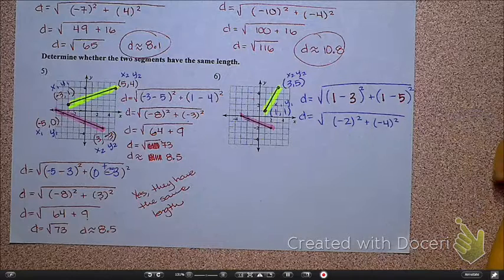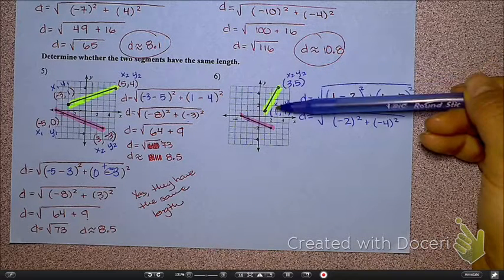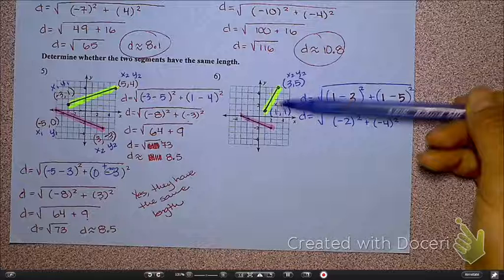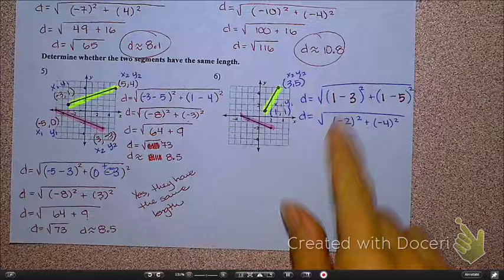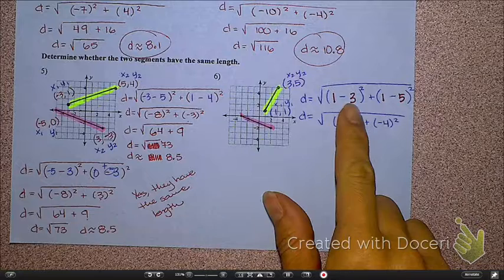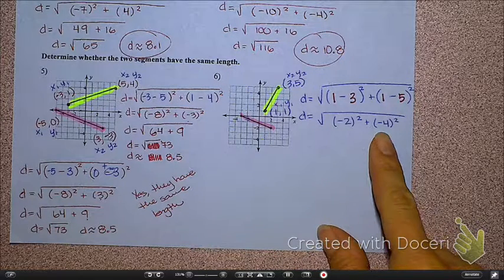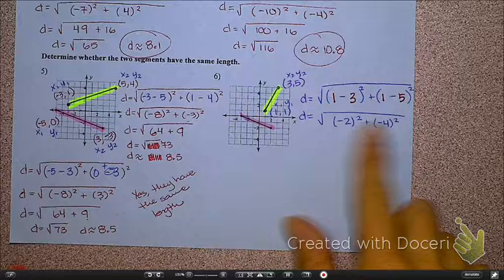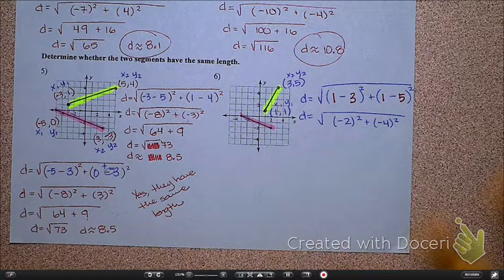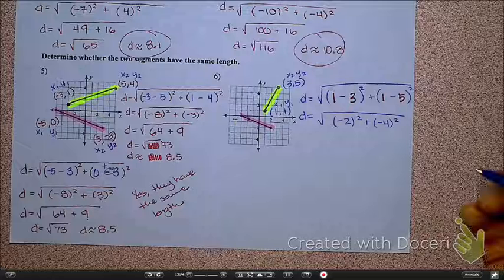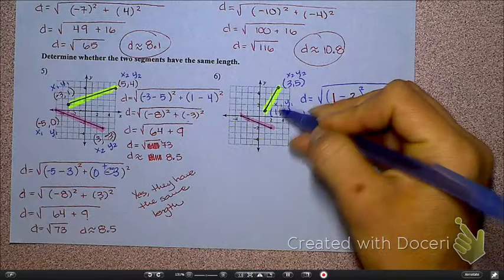Now, if you maybe didn't label these the same as I did, if you switched them, you made this the first point and this the second point, you would have had these backwards, but you would have just got positive 2 and positive 4 instead of negative 2 and negative 4. Does it really matter whether the number is positive or negative on the inside? Because when I square it, what does it become anyways? Positive.